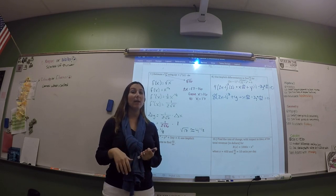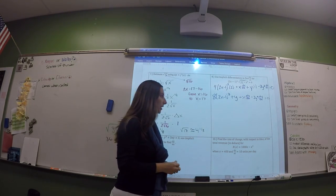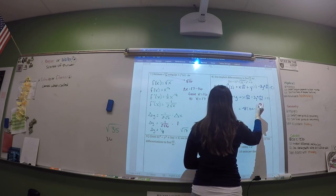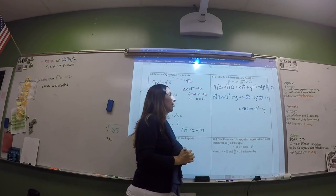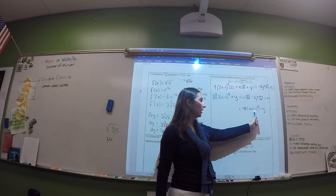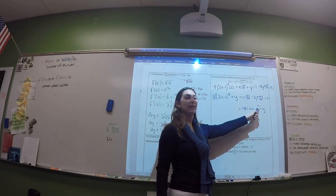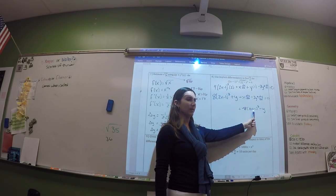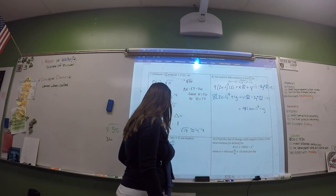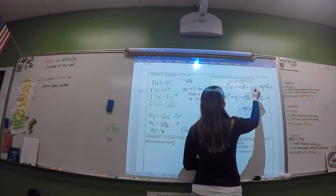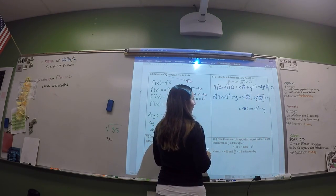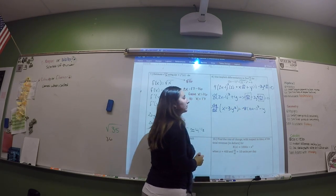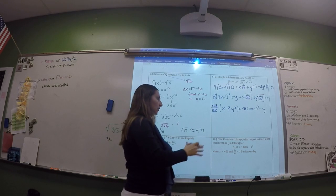Anything that has a dy/dx stays on the left, and anything that doesn't goes on the right. Subtract the 8(2X−1)⁴ term and the Y term to the right side. On the left, factor out dy/dx from both: dy/dx times (X minus 3Y squared). Then divide by (X minus 3Y squared) to isolate dy/dx.